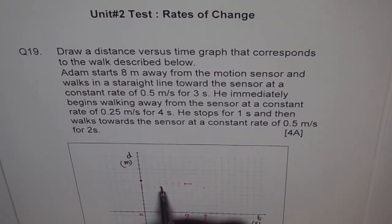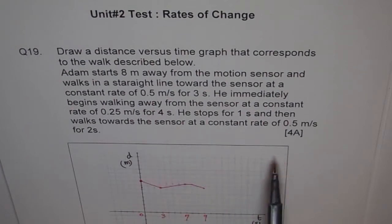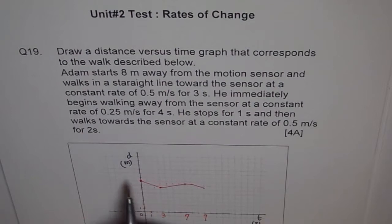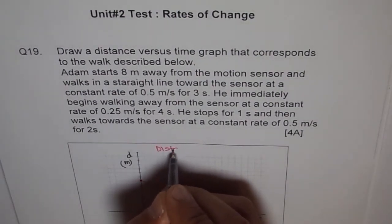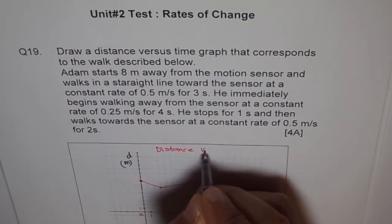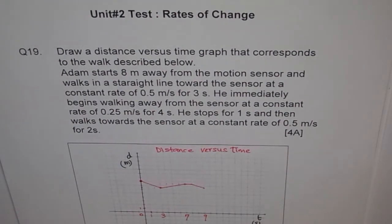So we can join these points and make our graph. So that is how you can make your distance and time graphs. It may require some manipulation — it is good to show your calculations on the side and draw the graph. Whenever you draw a graph, it is good to give a scale, so we will give a scale of 1 and 1 here. We have already written the units, and we will label it as the distance versus time graph.